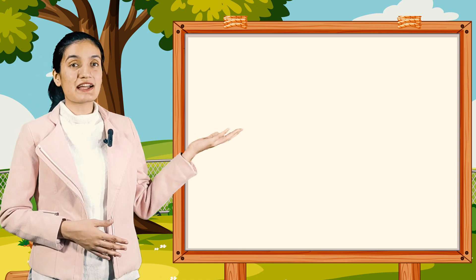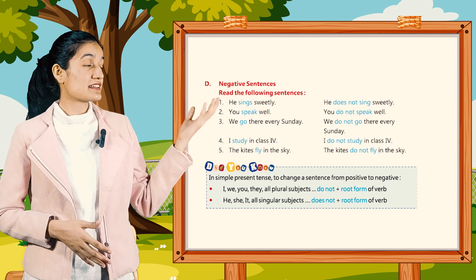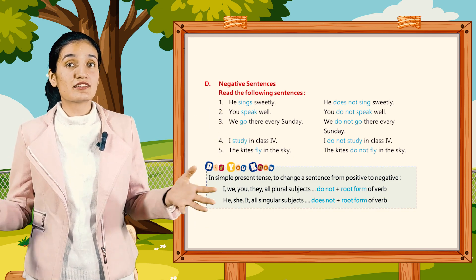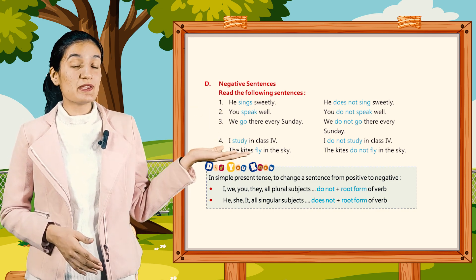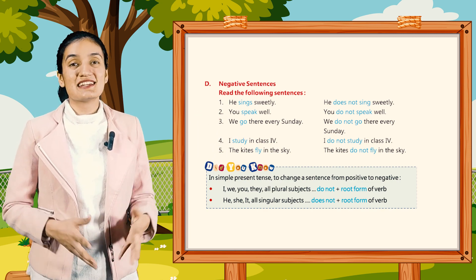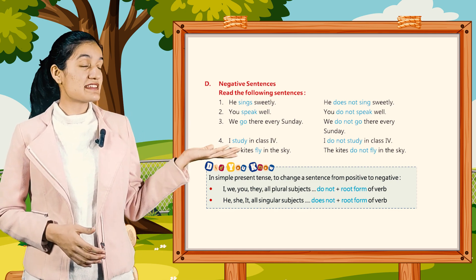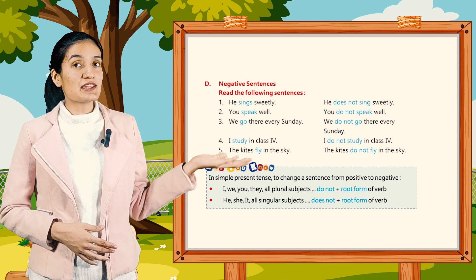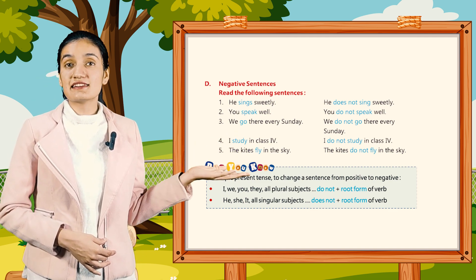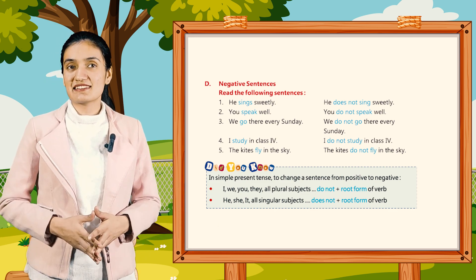Now let's move on to Part D: negative sentences. Read the following sentences. He sings sweetly — he does not sing sweetly. You speak well — you do not speak well. We go there every Sunday — we do not go there every Sunday. I study in class fourth — I do not study in class fourth. The kites fly in the sky — the kites do not fly in the sky. So here you can see negative sentences.